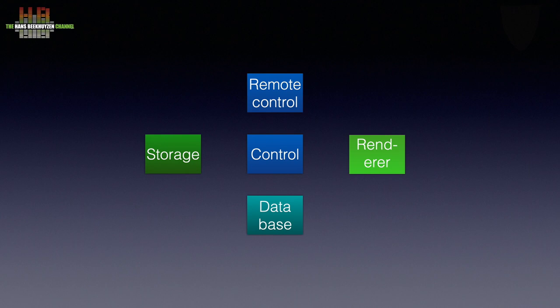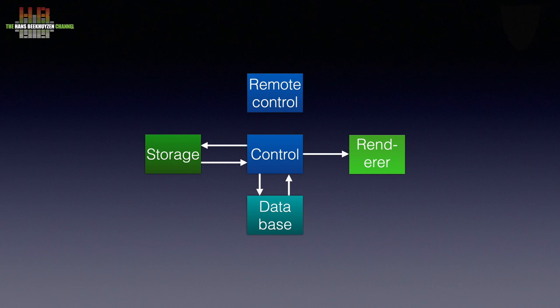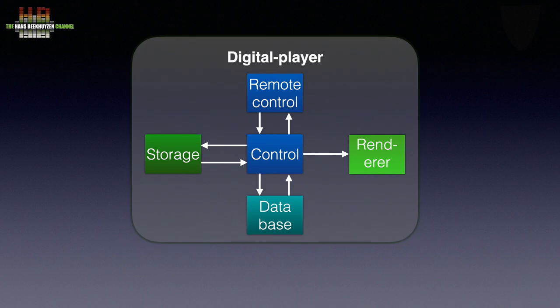When the digital player is switched on it usually will query the storage for its content. The result will be stored in a database. When the user makes a request, control will check the database, get the corresponding file from the storage and send it to the renderer. Simple infrared remote controls are unidirectional. More advanced remote controls like apps on a smartphone or tablet are bidirectional. If we remove the bidirectionality of the remote control we have the functionality of the first digital consumer player — the CD player.